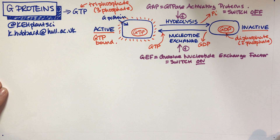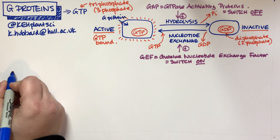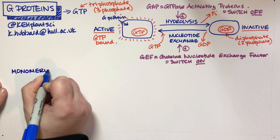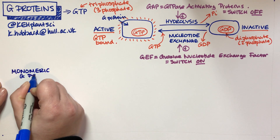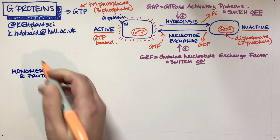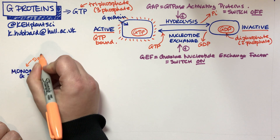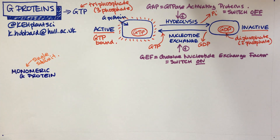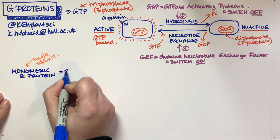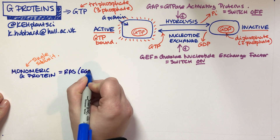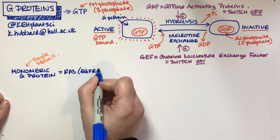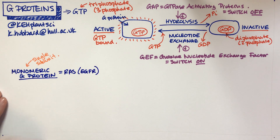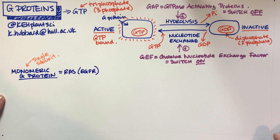There are two different types of G proteins found in cellular signalling cascades. One is a monomeric G protein — monomeric meaning single subunit — so just an isolated protein doing its thing. Our classic example for that is RAS, which is part of the EGFR cascade. There's a whole other video about growth factor signalling where RAS crops up.